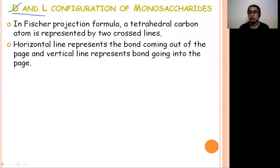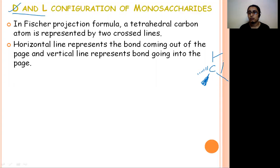Before that, you must know what is Fischer projection formula and flying wedge formula. In the flying wedge formula, there is a tetrahedral carbon, and around that tetrahedral carbon, four bonds are distributed in a spatial arrangement. One bond is away from the observer, two bonds are in the plane, one bond is towards the observer, and one bond is away from the observer — or we can say one bond is above the plane and one is below the plane.